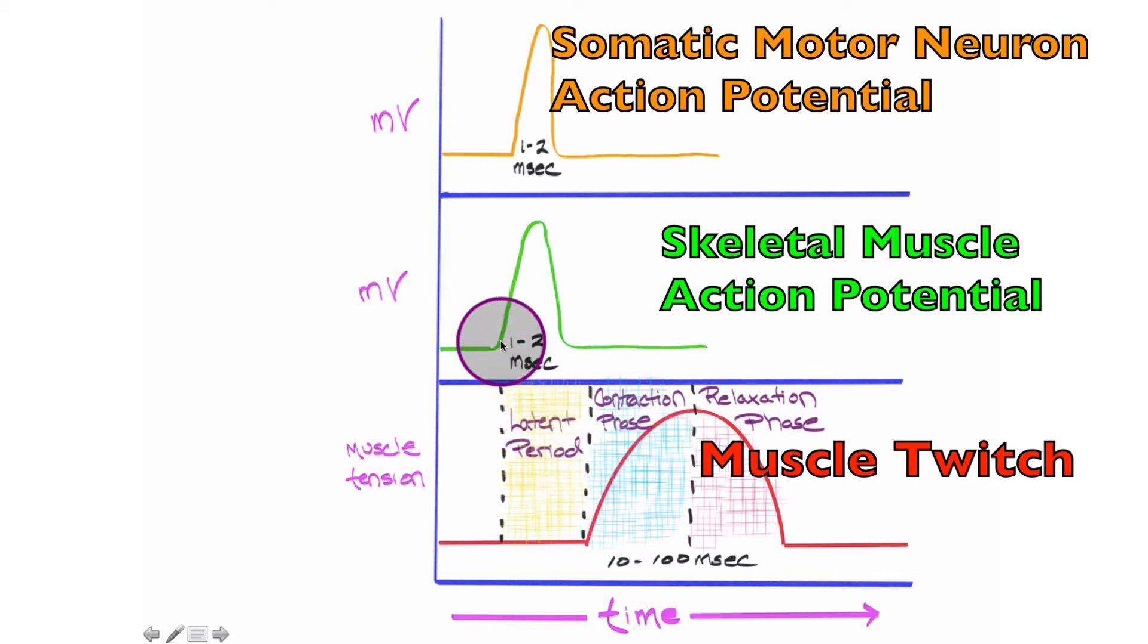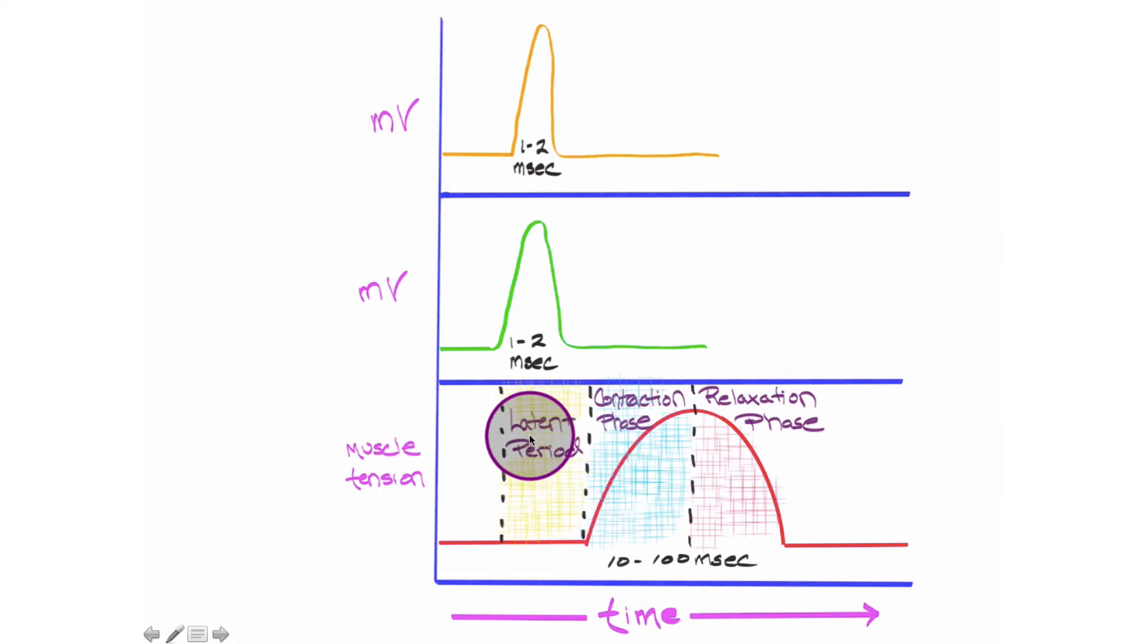One significant thing to see in this graph right there is a time lag or delay between the initial depolarization or excitation of the muscle fiber, which we see right here, and when that muscle fiber actually begins to shorten or contract.